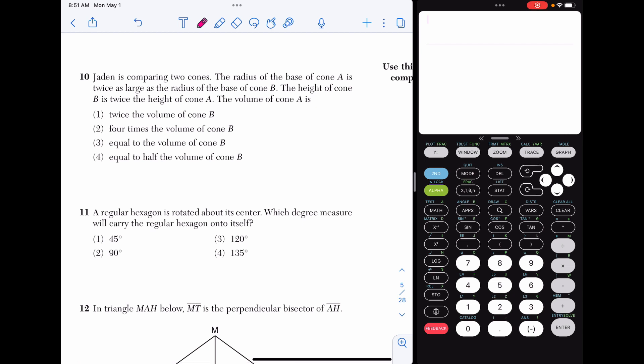Number 10. Jaden is comparing two cones. The radius of the base of cone A is twice as large as the radius of the base of cone B. The height of cone B is twice the height of cone A. The volume of cone A is... For a problem like this, this can be very abstract for a lot of people. So if you have trouble, you could always just make up some numbers and compare them that way. The volume of a cone is volume equals one-third π R squared H. And really, when I'm looking at this, both of these formulas have one-third involved, and they both have π involved. So I really need to compare the R squared H part of each formula.